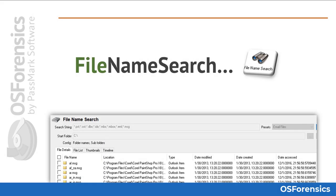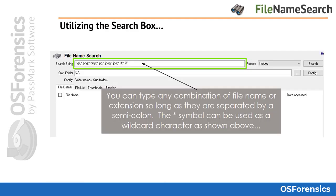Next we'll look at the file name search module, which is another very powerful and fast feature that you will more than likely use on just about every case. A basic search simply involves entering a search string in a location. Any files or folders that contain the search string within the file name will be displayed in the search results. For instance, searching for 'file' will match file.txt, test.file, or myfile.doc. The basic search is case insensitive.